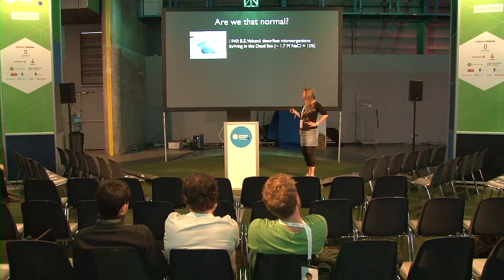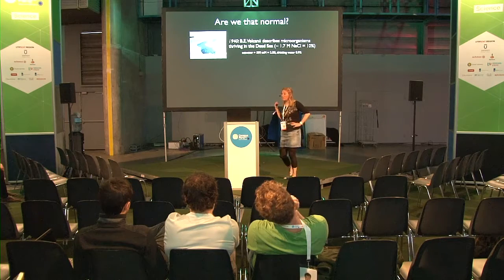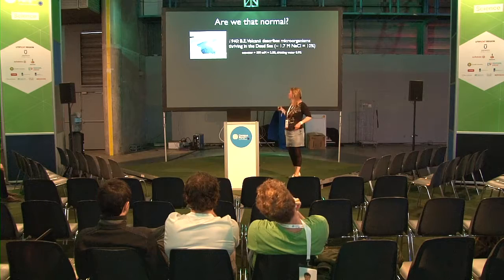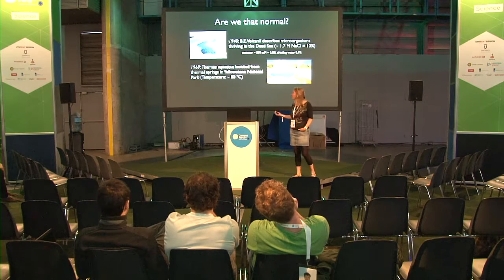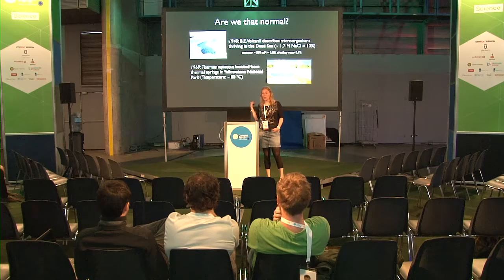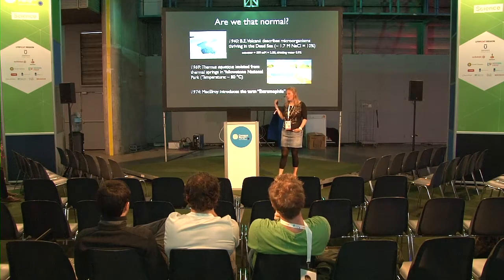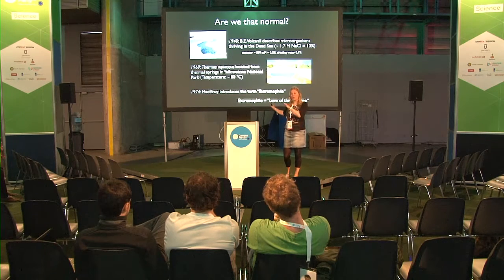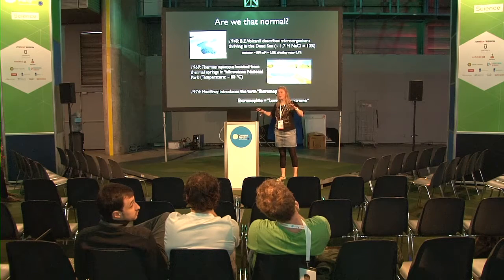Already in 1940, microorganisms were detected in the Dead Sea. Seawater has a salinity of 3.5% — if we drink that, we poison ourselves. Our drinking water has a salinity of 0.9%. In 1969, another bacterium was isolated from Yellowstone that lived at 80 degrees and actually could not live at temperatures below 80 degrees — it needed these high temperatures but happily lived there. In 1974, someone coined the term extremophile, which is Greek for the love of the extreme. So we compare everything to ourselves and call these critters extreme, but you can wonder: are we actually that normal, or is that extreme life much more normal?